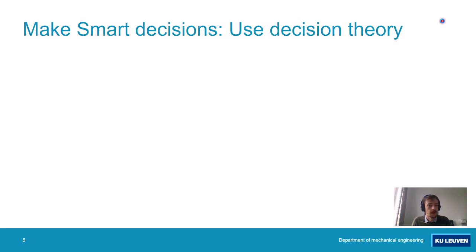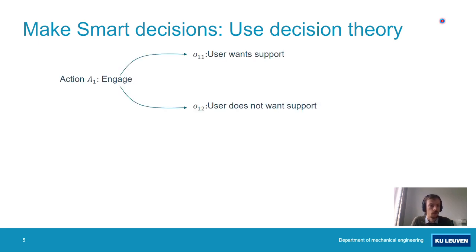Once the exoskeleton has recognized the motion, it now needs to make a decision about whether to engage the support mechanism or not. To do this, we use decision theory. This means we first think of the actions the controller can make, as well as the outcomes or situations we can end up with. The first action is to engage the support mechanism, which can result in either the user getting the support they want — a positive situation — or the user not wanting support but getting it anyway, in which case the exoskeleton is hindering the user. To both of these situations, we assign a utility or usefulness score: a positive score for the positive situation and a negative score for the negative situation.